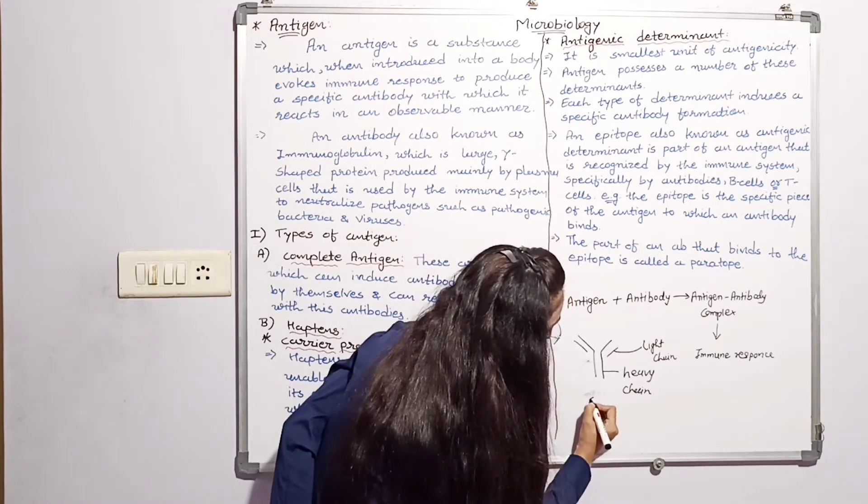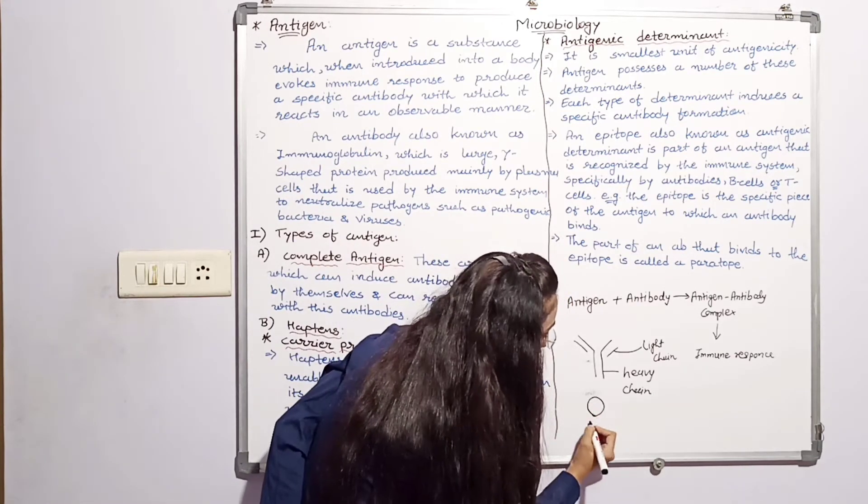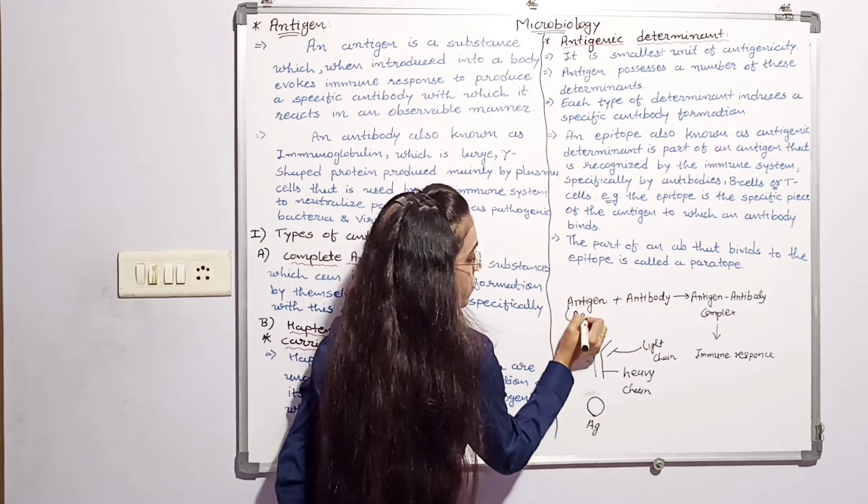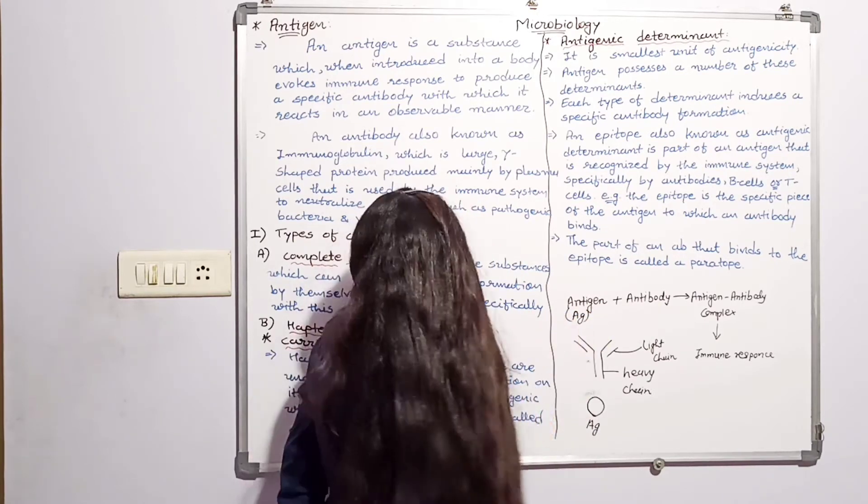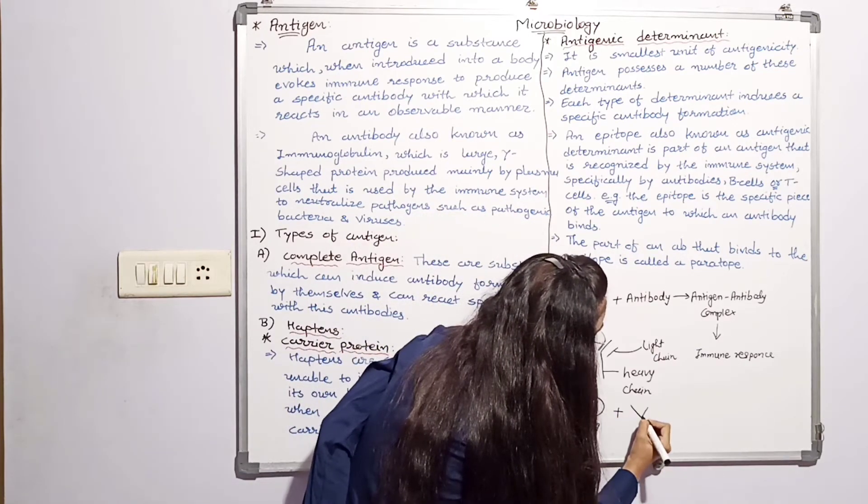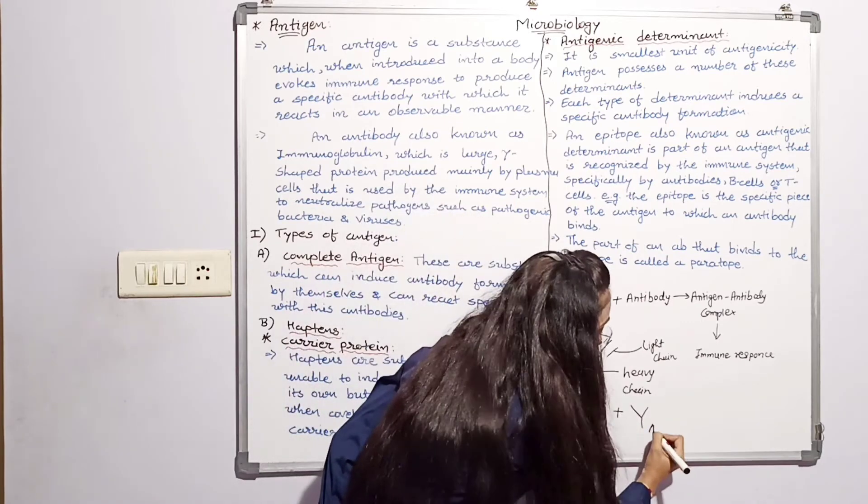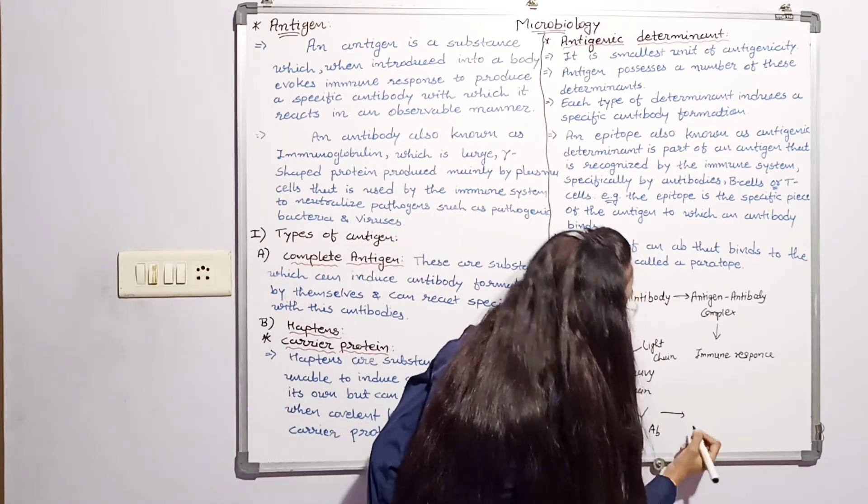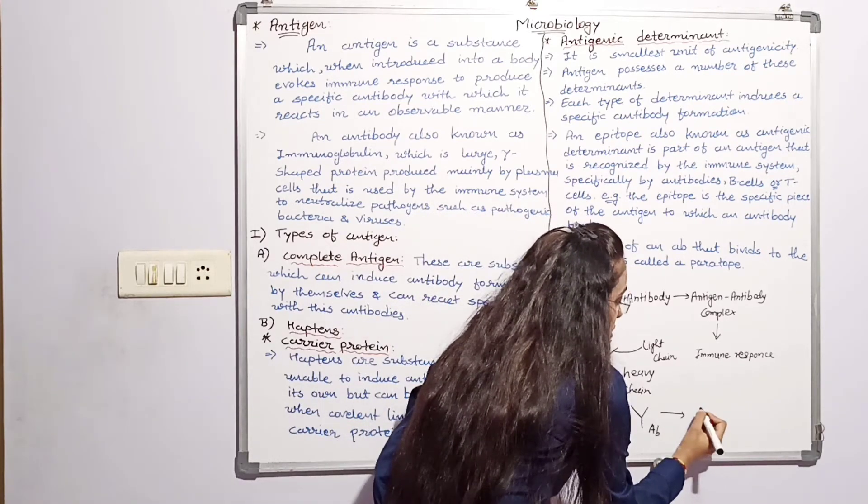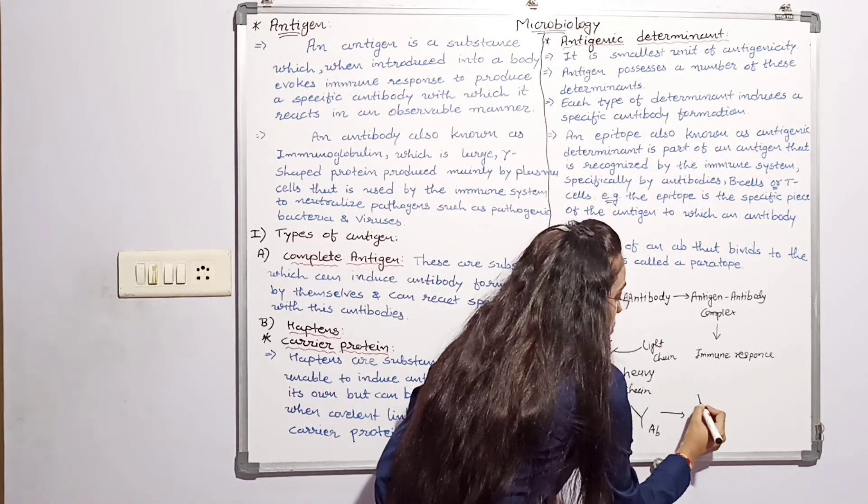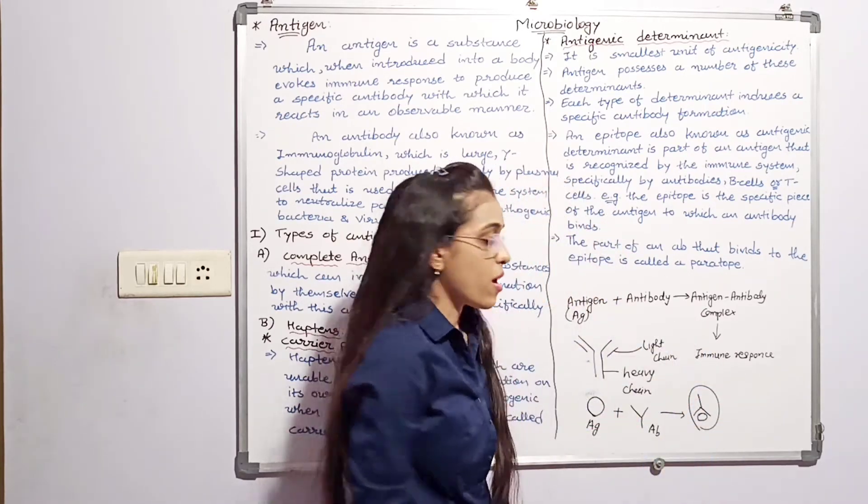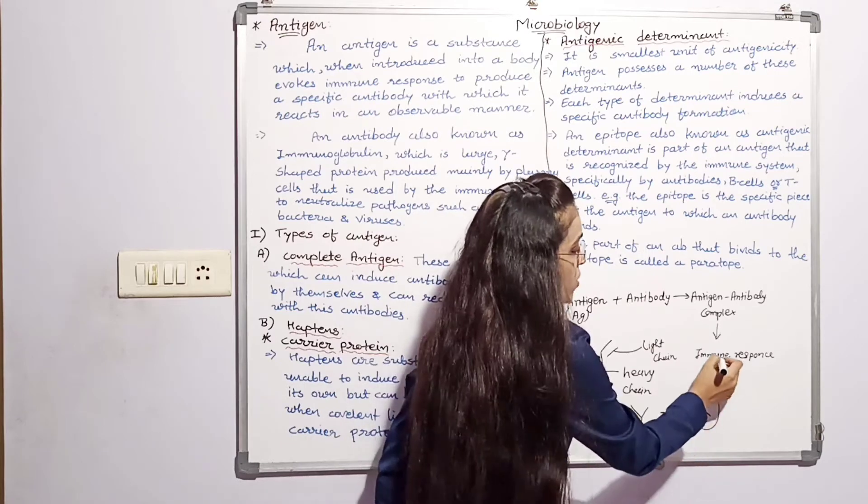It is an antigen. Antigen has a shape. Antibody has a shape. They form a complex. This is a complex immune response.